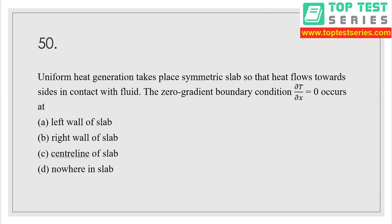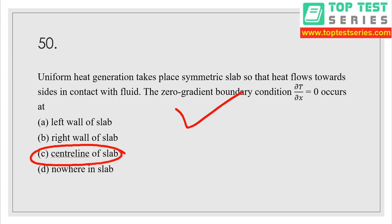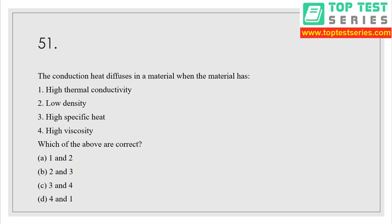Question number 50: for uniform heat generation in a symmetric slab where heat flows toward sides in contact with fluid, zero gradient boundary condition occurs at the center line of the slab. This is a one-line type question.